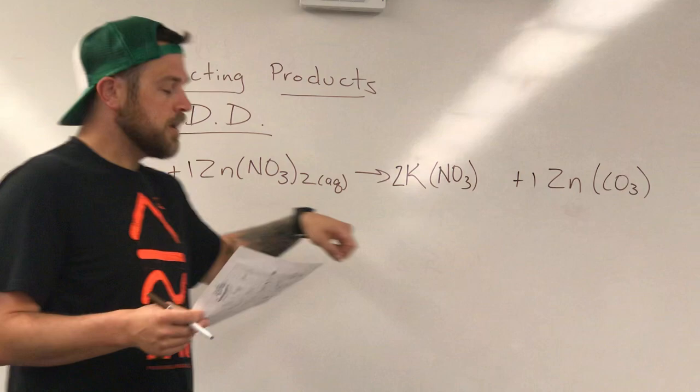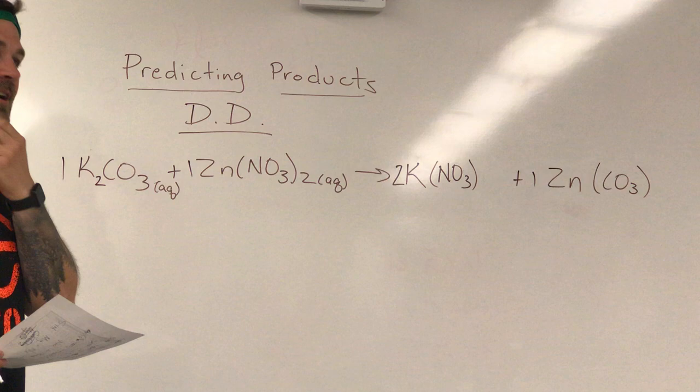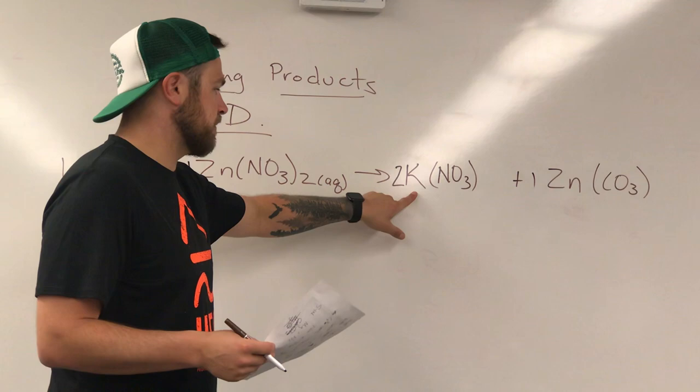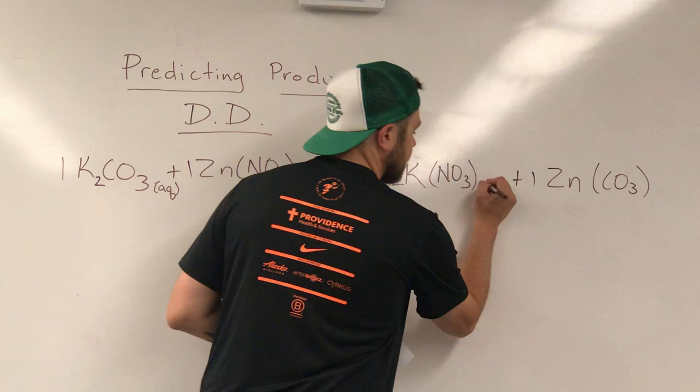Well, this first one is really pretty easy because rules one and two apply to both of these things and rules one and two both say that they're going to be soluble a hundred percent of the time. So rule one says potassium always is going to dissolve in water, and rule two says nitrate is always going to dissolve in water. So this guy right here is AQ.